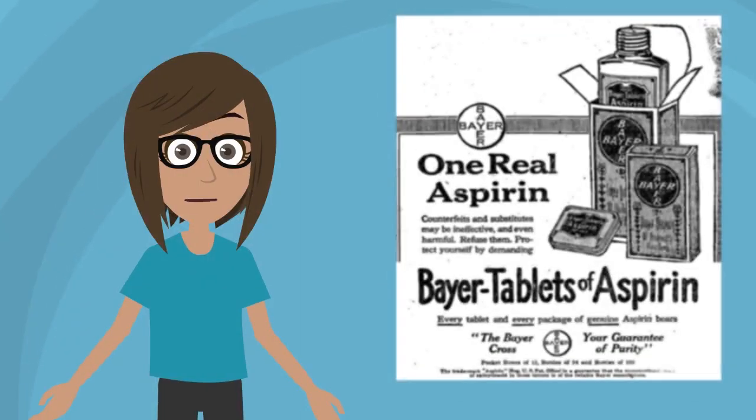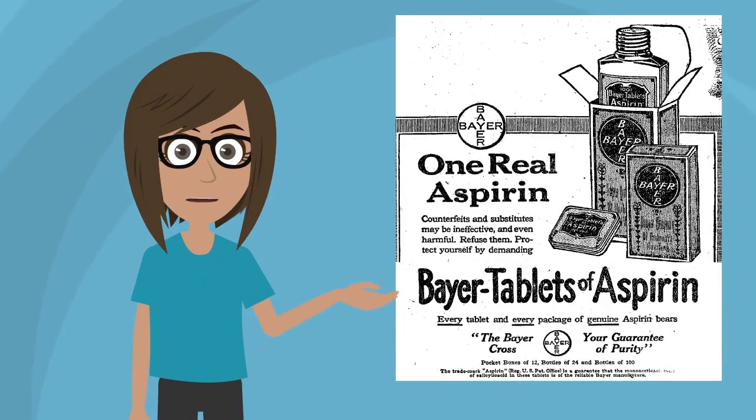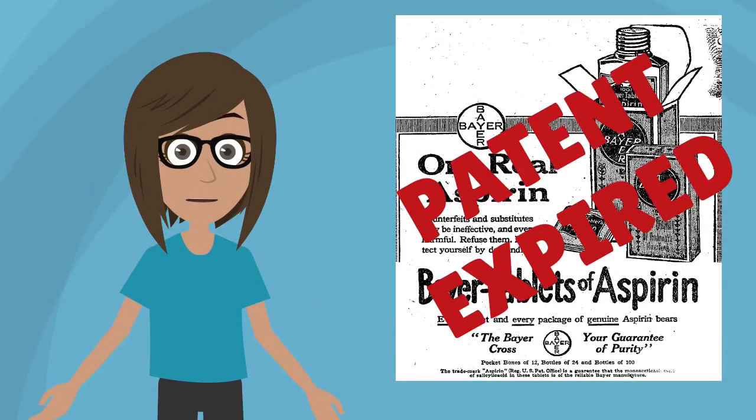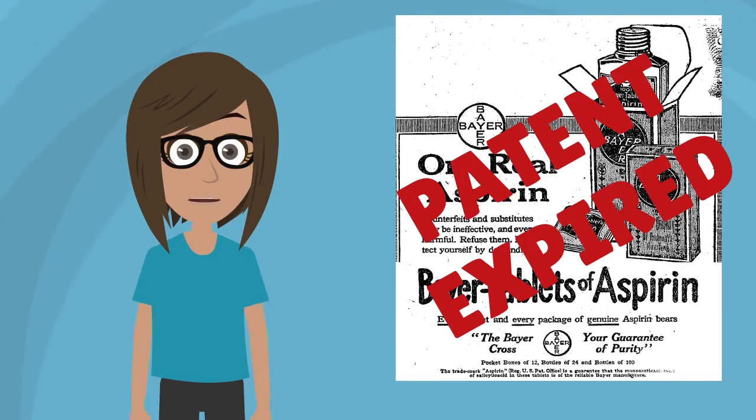Way back in 1899, aspirin was a trademark brand. When the patent expired, other companies could create their own generic versions. These versions could follow the exact same manufacturing process, have the exact same chemical structure, and therefore have the exact same effect.